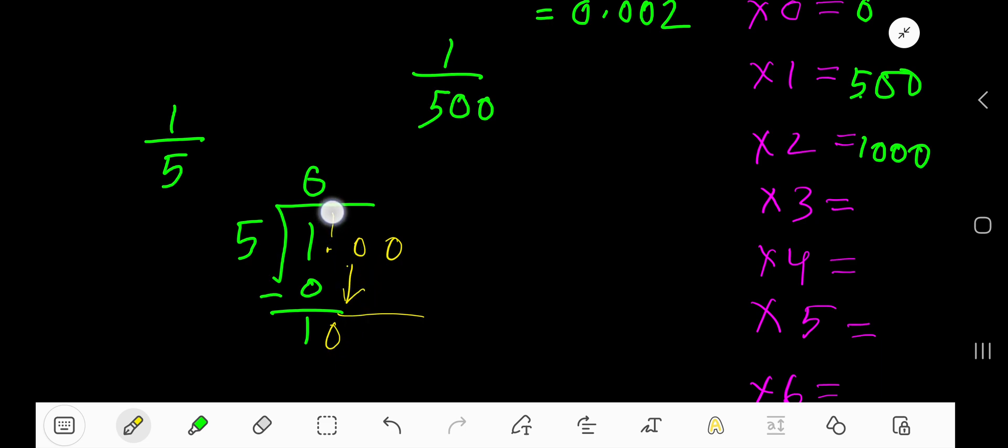5 goes into 10 how many times? 2 times. 2 times 5 is 10.